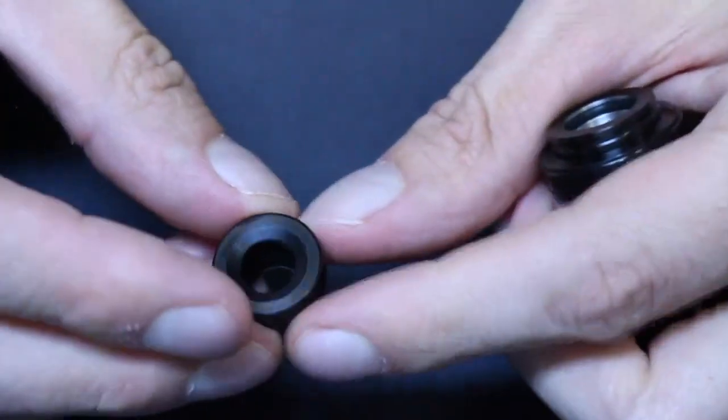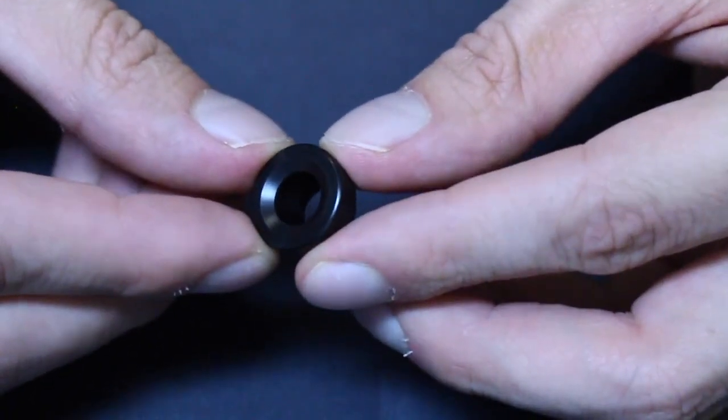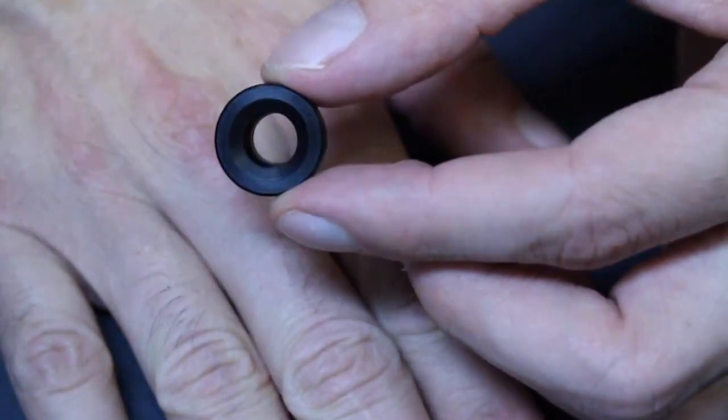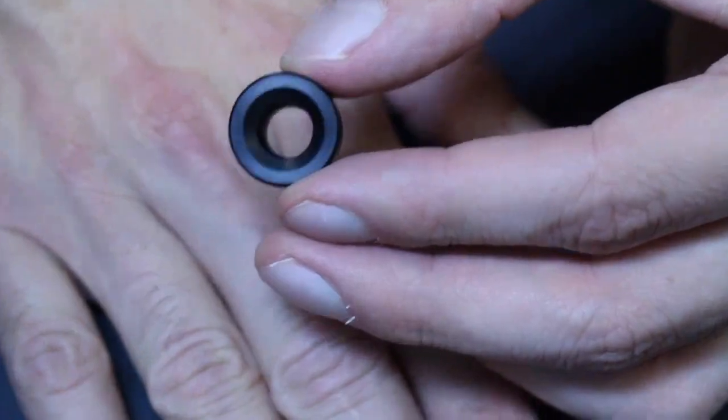The Cerberus comes with one typical 810 Delrin drip tip. You can use other 810 drip tips just fine, but because the included tip is about 18.6mm wide, you'll need one about the same size if you want it to sit flush on the tank. But even smaller tips look fine on here.